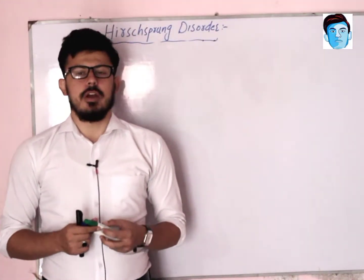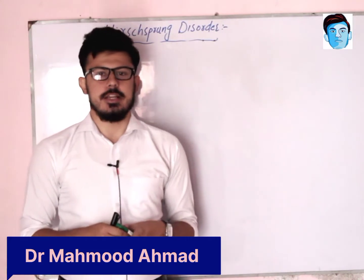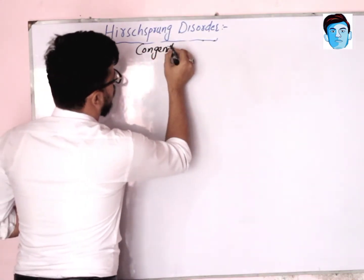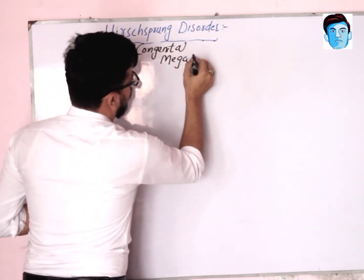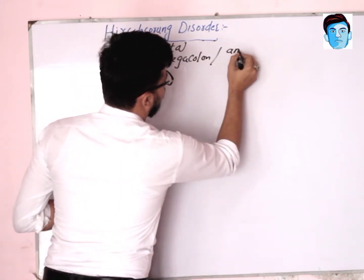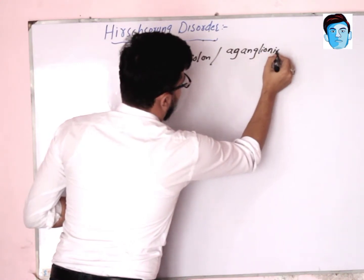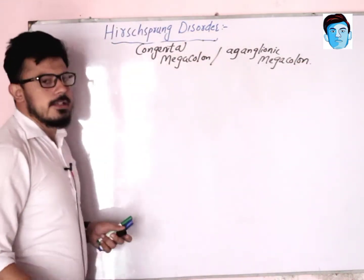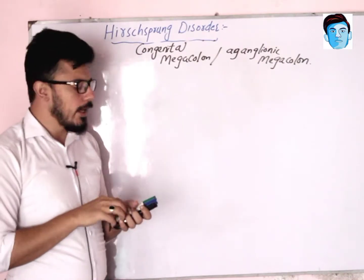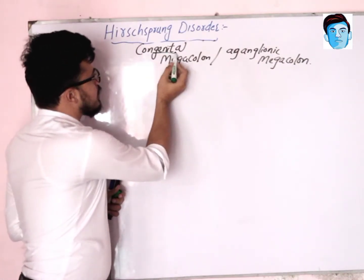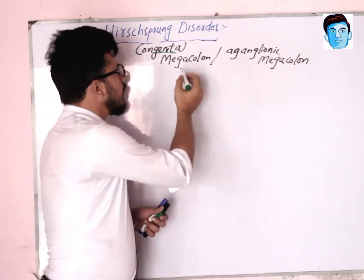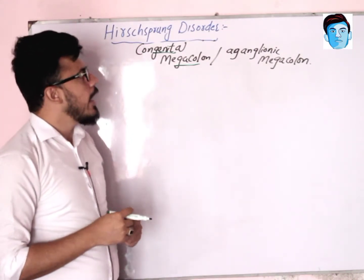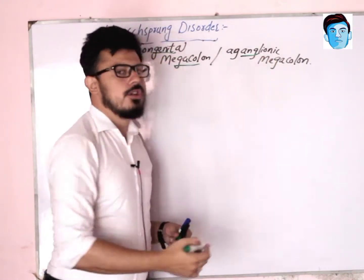Today I will be discussing a very important disease termed Hirschsprung disease, which is also known as congenital megacolon or aganglionic megacolon. The term congenital means the disease is not an acquired condition but hereditary. Megacolon means the size of the colon is increased, and aganglionic means that the ganglionic nerves are absent.